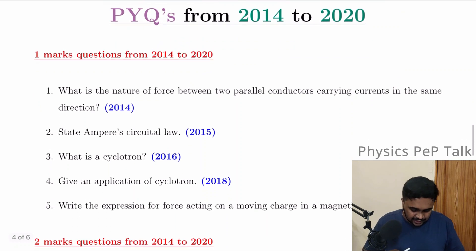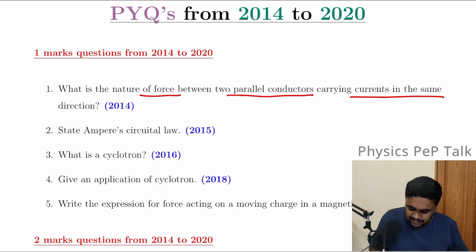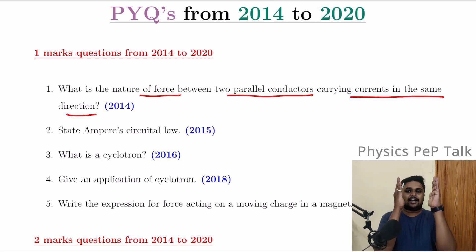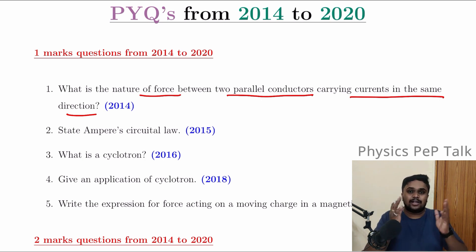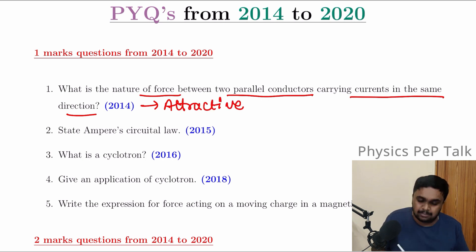One mark question: What is the nature of force between two parallel conductors carrying current in the same direction? When the current is in the same direction, that is an attractive force — just attractive force. One mark, one word answer.